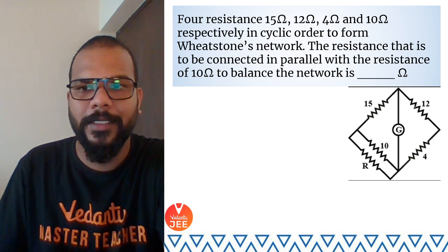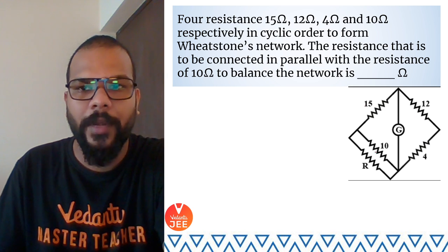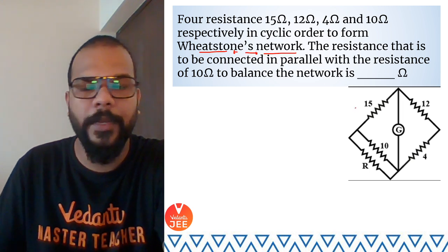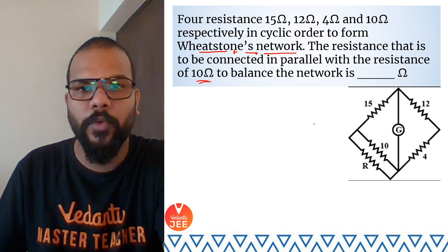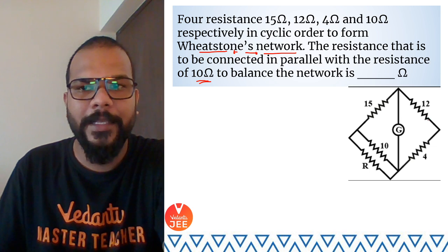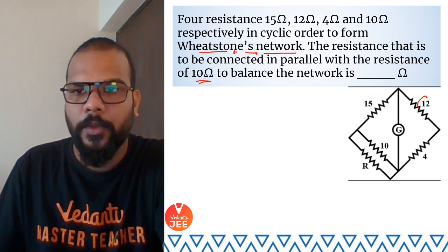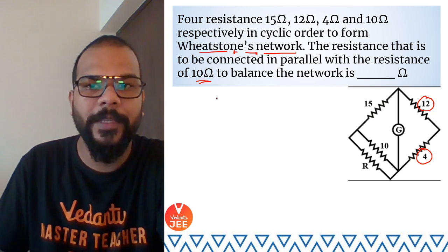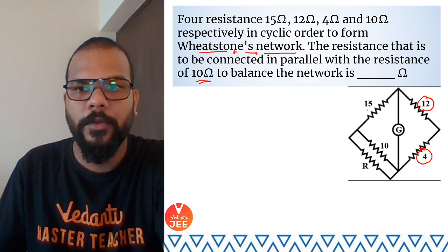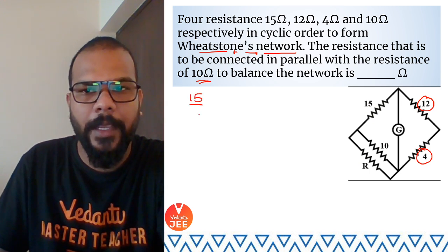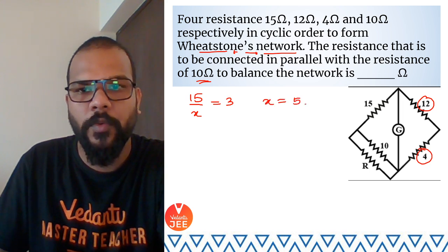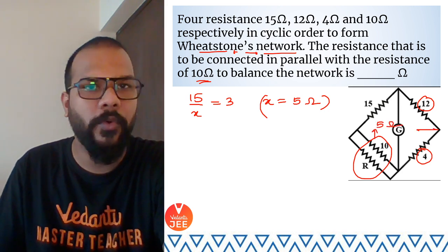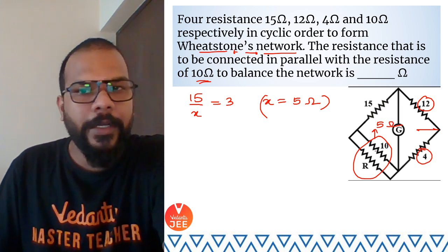The last numerical problem involves four resistances: 15, 12, 4, and 10 ohms, arranged in cyclic order to form a Wheatstone bridge network. We need to find the resistance to be connected in parallel with the 10-ohm resistor to balance the network. For a balanced Wheatstone bridge, the ratio 12/4 = 3 must equal 15/x, giving x = 5 ohms. So the effective resistance on that arm must be 5 ohms.